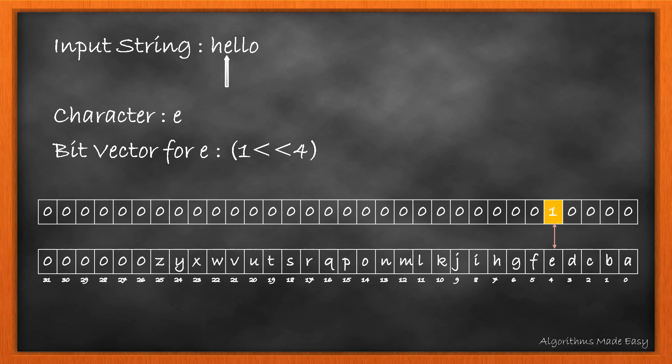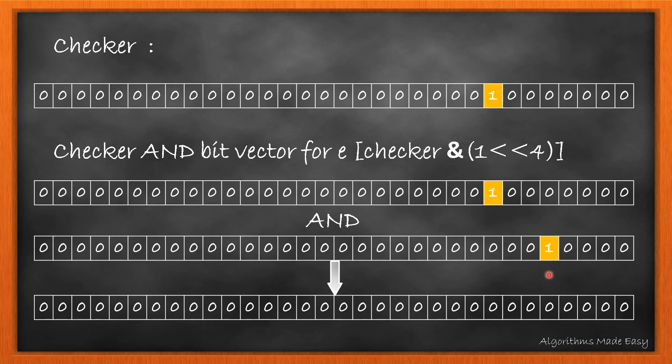Moving forward, we will create a bit vector for 'e' that will be by shifting 1 by 4 bits. We will check if the bit is duplicate by performing an AND operation with the checker. The result here is not greater than 0. So, we move forward and update the checker.